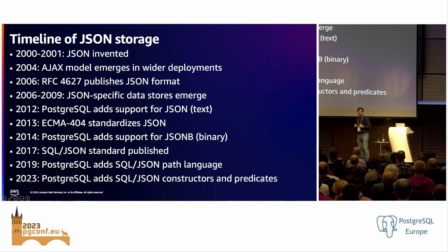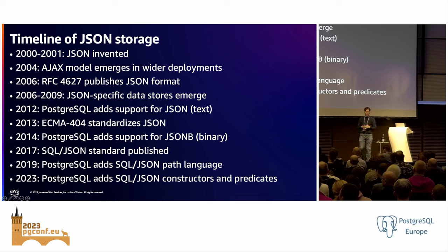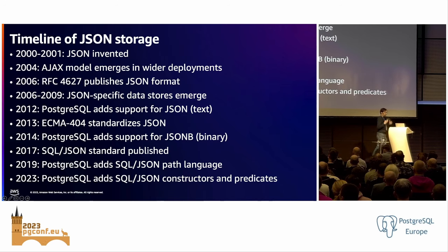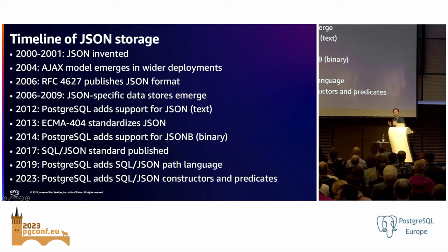Postgres became the first relational database to store JSON, and a lot has certainly evolved since Postgres broke the mold. It was that common problem — there was a kind of application being built — and Postgres was able to adapt itself to handle that kind of data from the application developer's needs.